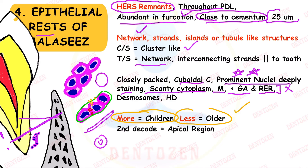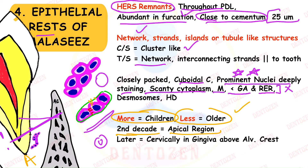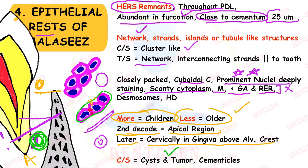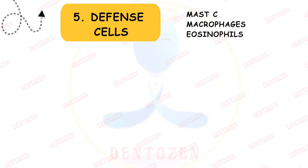These cells are more numerous in children and decrease with age. In the second decade they are more in the apical region, but with age they become cervically located in the gingiva above the alveolar crest. Their significance: though resting, they can proliferate to form cysts and tumors, or calcify to form calcified masses within the PDL called cementicles.